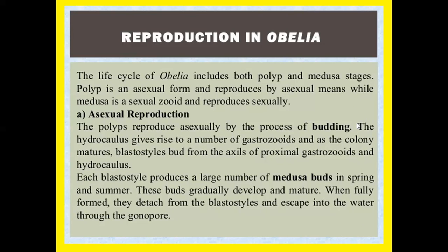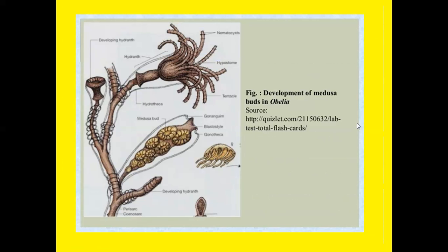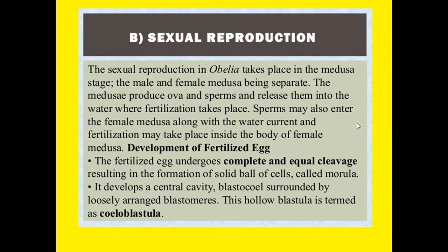Reproduction in Obelia — the life cycle includes both polyp and medusa stages. The polyp is an asexual form and reproduces by asexual means, while the medusa is a sexual zooid and reproduces sexually. Asexual reproduction: the polyp reproduces asexually by budding. The hydrocaulus gives rise to a number of gastrozooids, and mature blastostyles form in the axils of proximal gastrozooids and hydrocaulus. Each blastostyle produces a large number of medusa buds in spring and summer. These buds gradually develop and when fully formed they detach from the blastostyle and escape into the water.